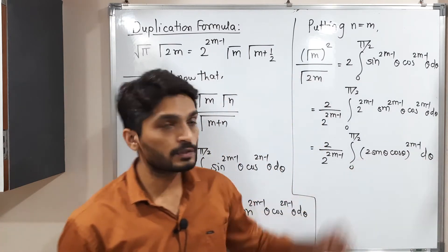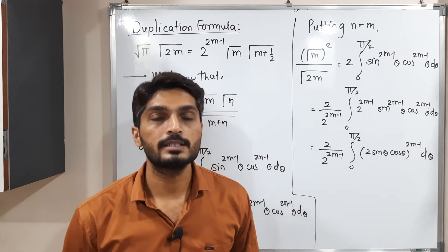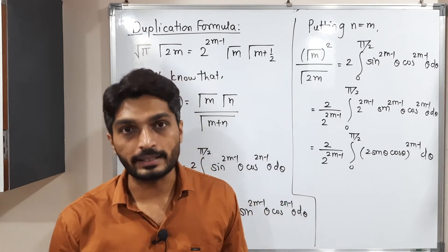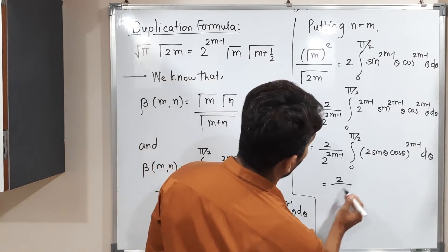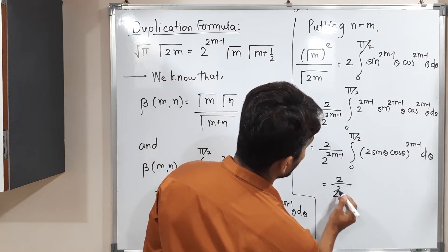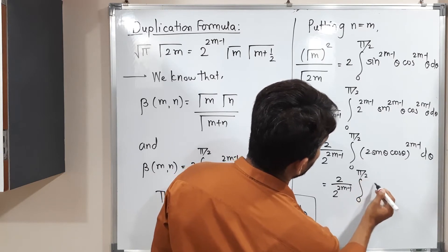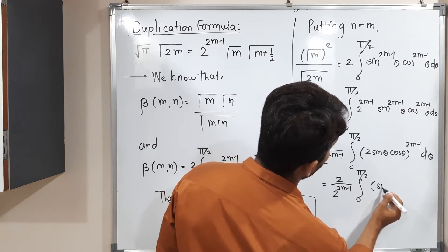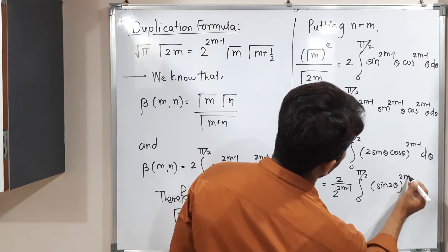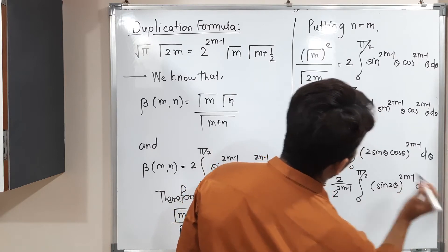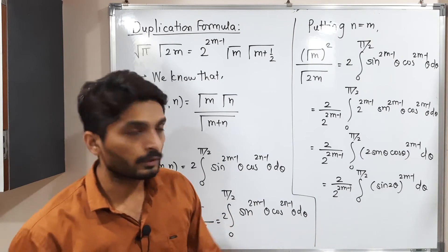Are you familiar with the formula 2 sin(θ) cos(θ)? This equals sin(2θ). So we write: 2 / 2^(2m−1) times the integral from 0 to π/2 of sin^(2m−1)(2θ) dθ.